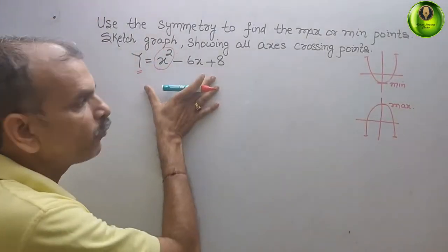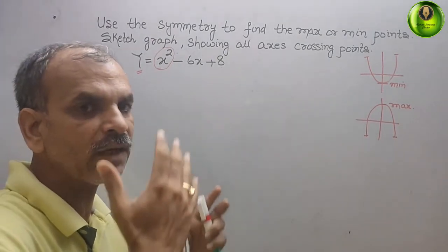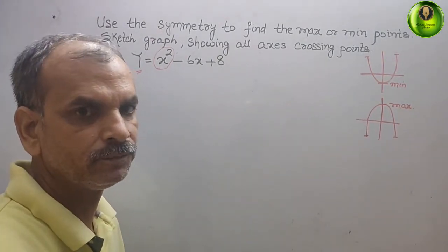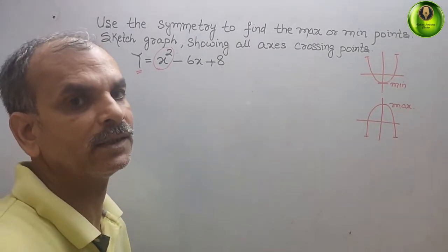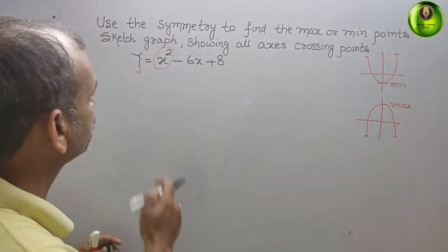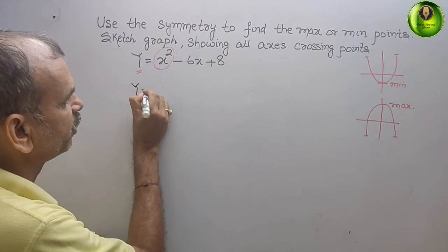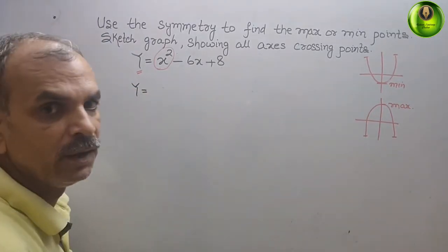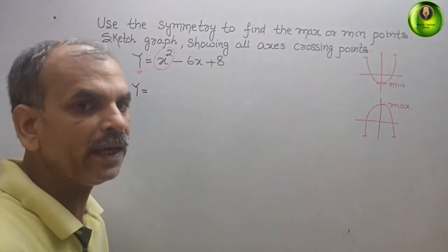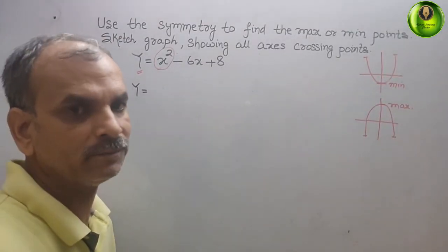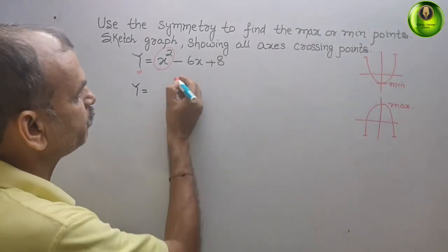Now we will find out the minimum or maximum point. We will go for the completing the square method. Here you can see the second term is minus, so we will make it as a minus b whole square form. If it were plus, we would use a plus b whole square.